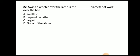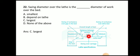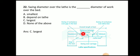Next question: swing diameter over the lathe is the largest diameter of the work over the bed. Here you can see the swing diameter — it is the maximum diameter that can be used on this lathe machine, which is one of the specifications of the lathe. You can also see the distance between centers, meaning this much length and this much diameter can be turned on the machine.